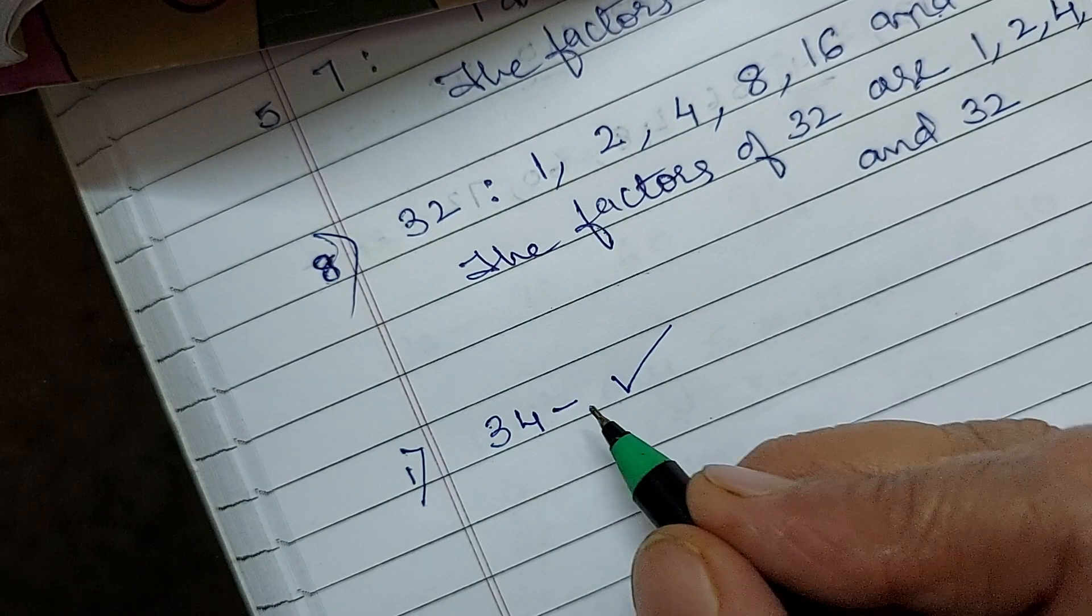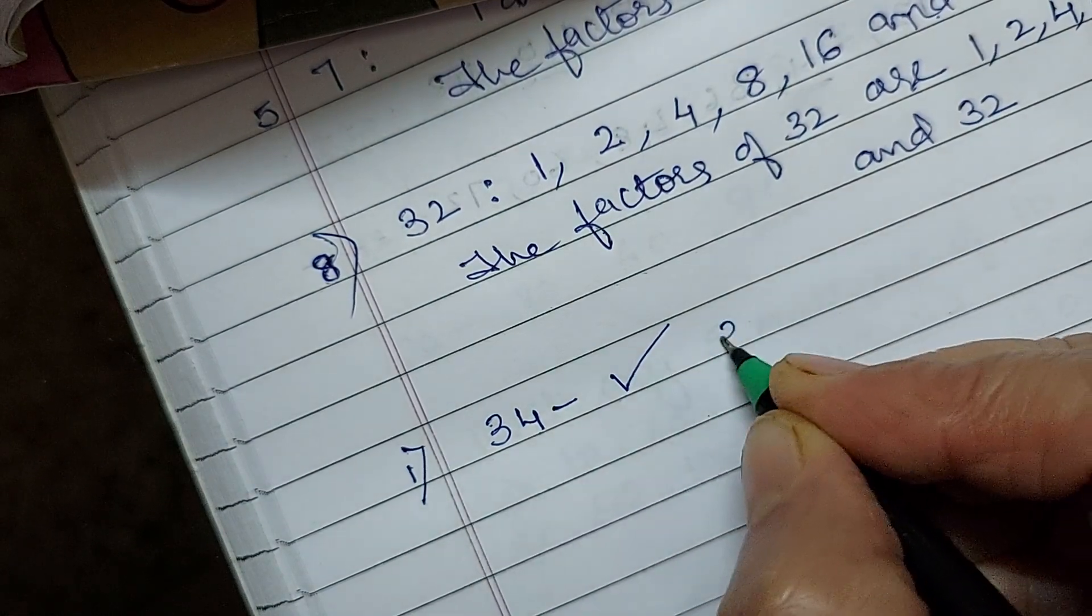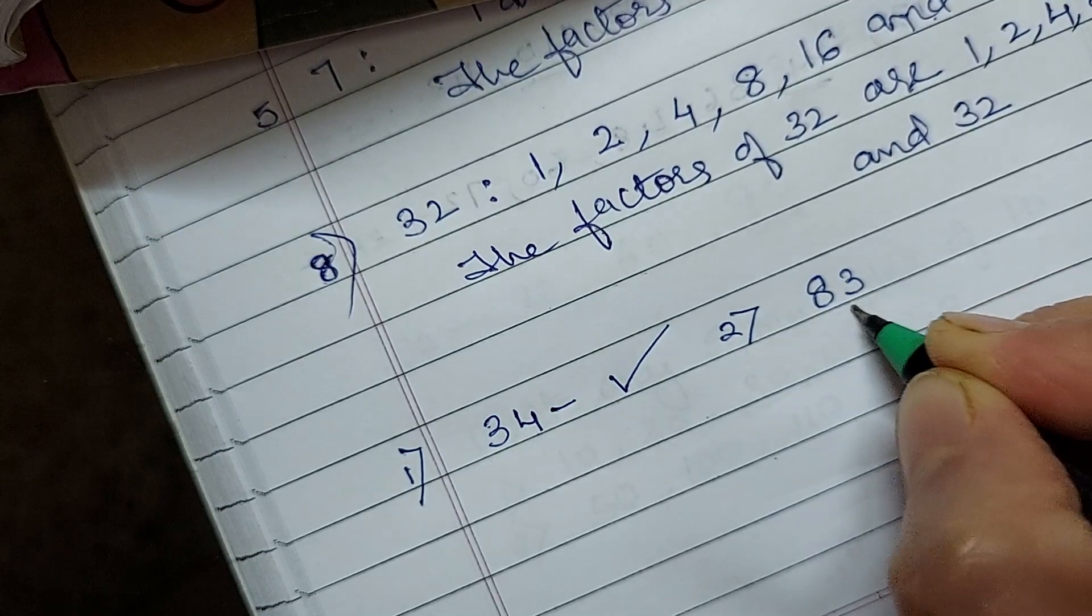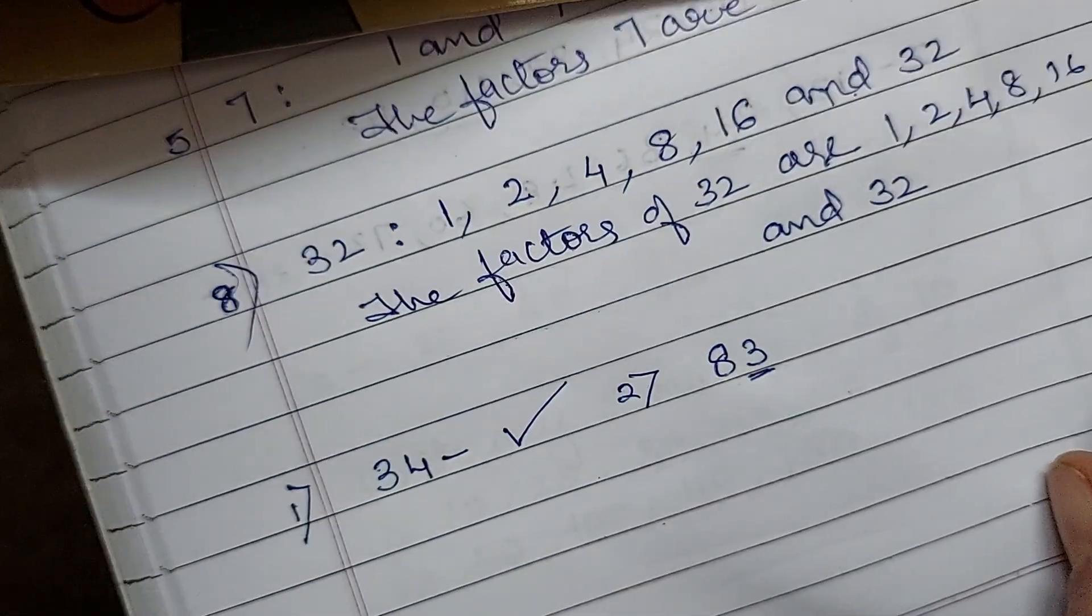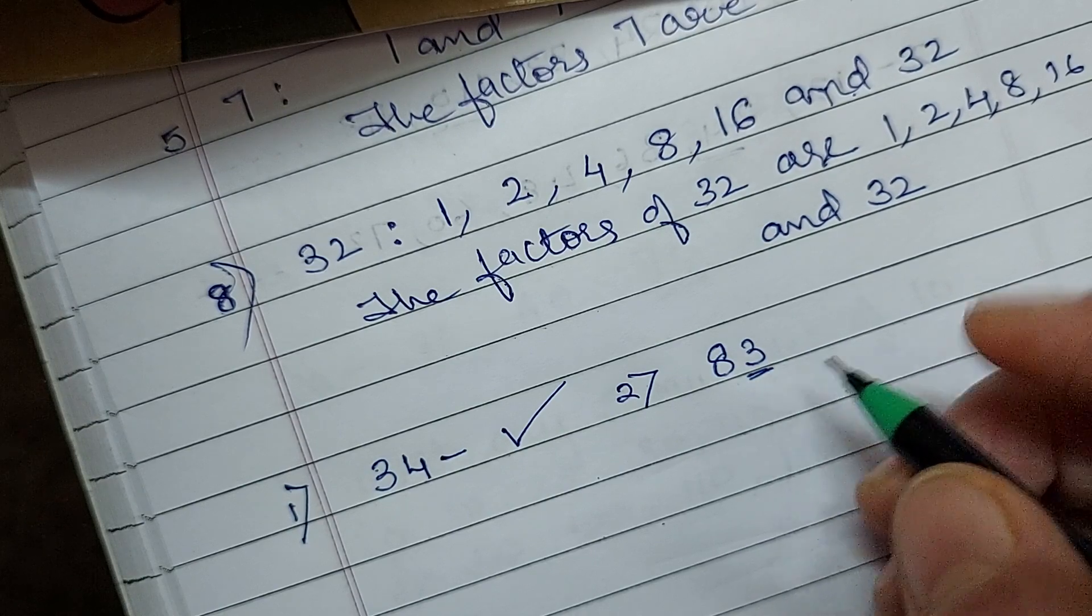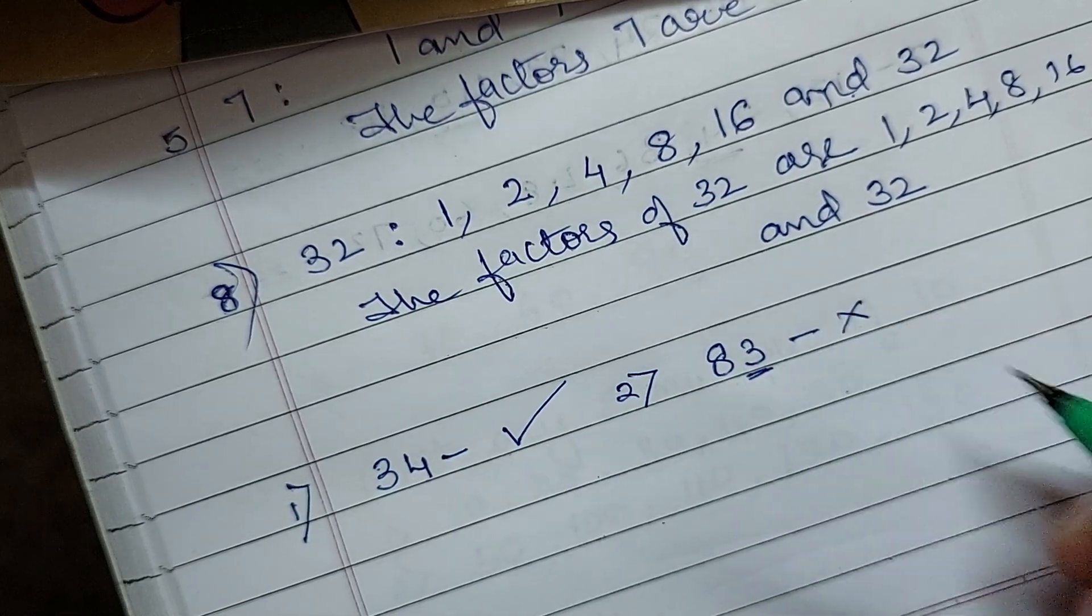Exactly divisible by 2. Now second number if I am taking it is 83. The units place number is what? 3. It is odd or even? It is odd. So it is not divisible by 2.